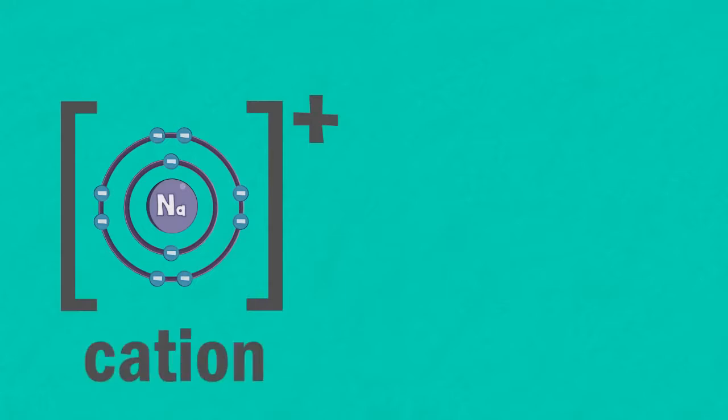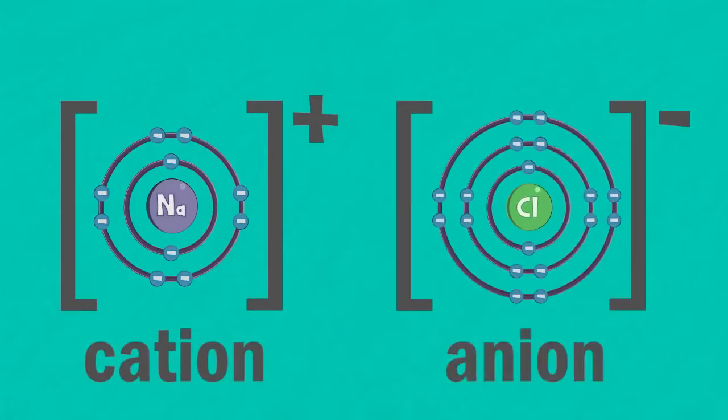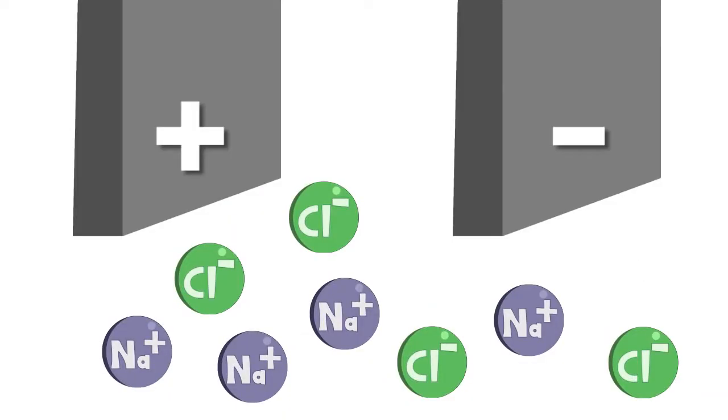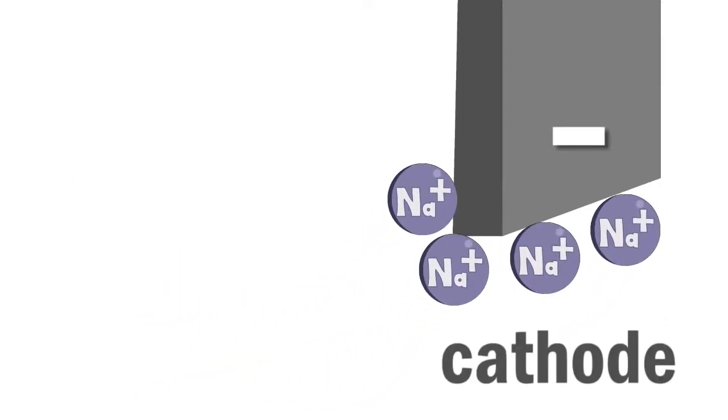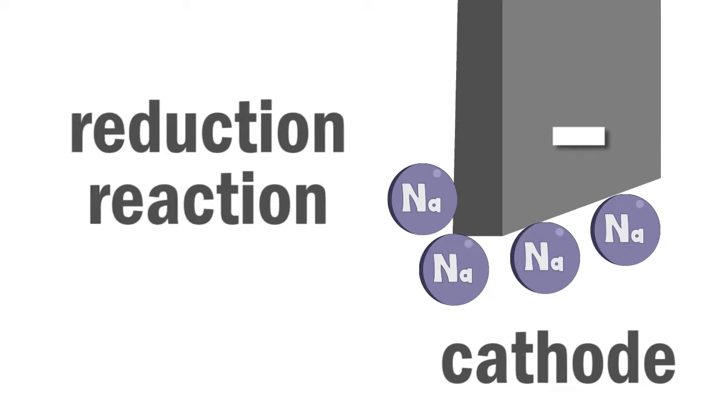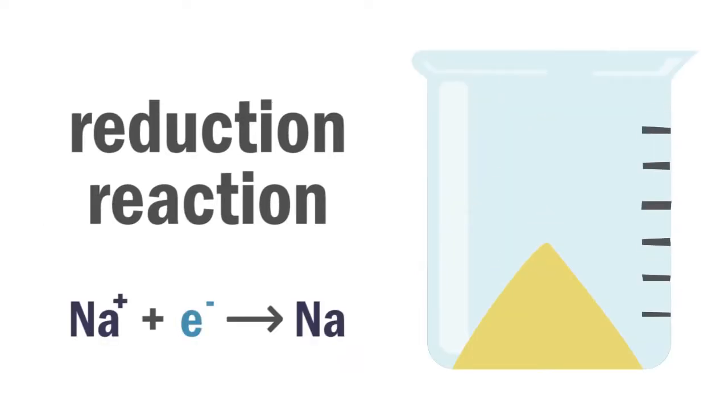The ions are a sodium cation and a chloride anion. Sodium ions will be attracted to the negative electrode, the cathode, where they combine with electrons to give sodium atoms. This is a reduction reaction. Each ion gains one electron and sodium metal is produced.